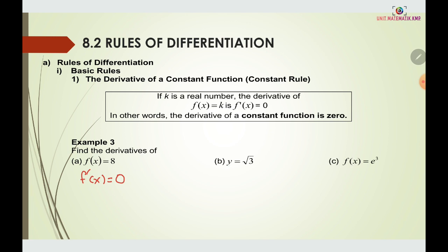For example, y = 3, so dy/dx = 0. For f(x) = e³, since e is a constant — its value is approximately 2.7183 — e³ is just a number. So when we differentiate a constant, it becomes zero.